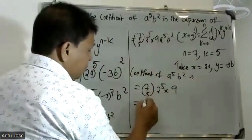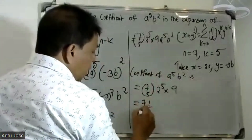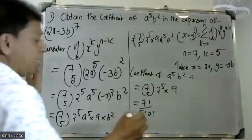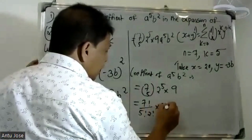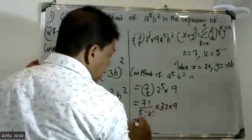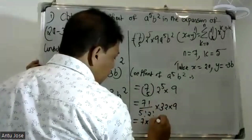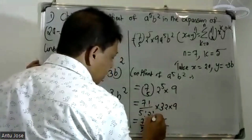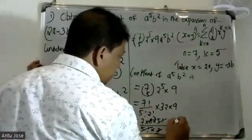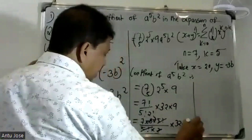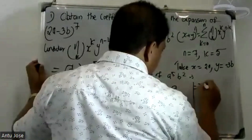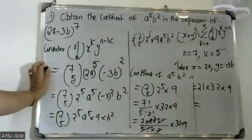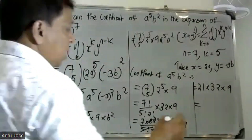Now 7C5 equals 7 factorial divided by 5 factorial times 2 factorial. That is 7 times 6 times 5 factorial divided by 5 factorial times 2, which equals 21. So the coefficient is 21 times 2 raised to 5 times 9.